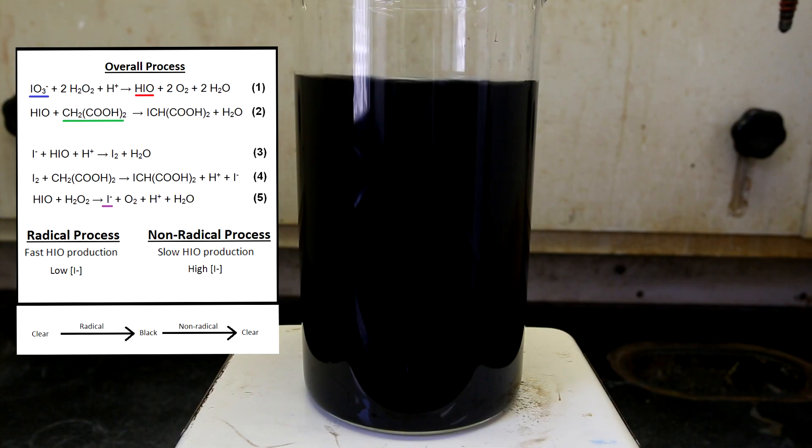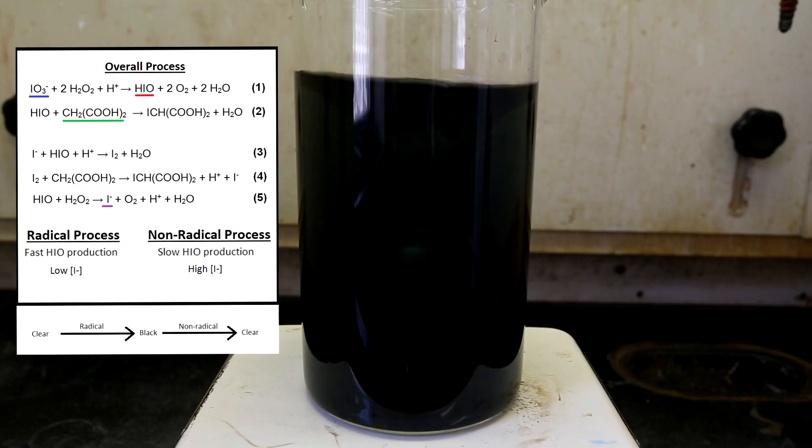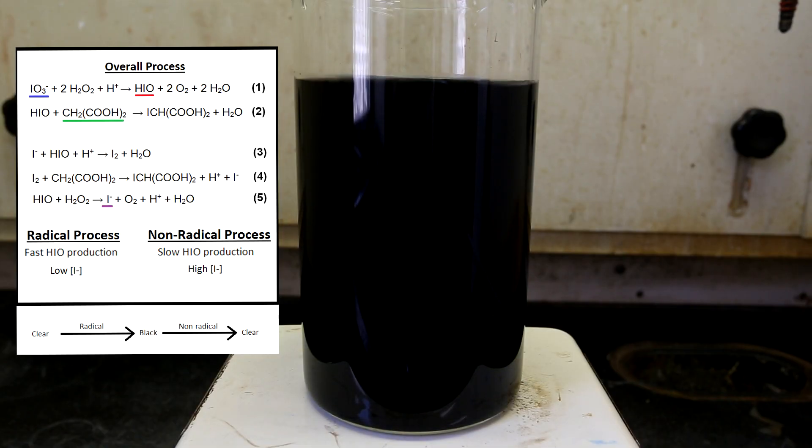Eventually, a threshold concentration of iodide will be reached. At this point, iodine and iodide molecules will combine together with starch to form a complex. The formation of the blue-black starch complex marks the end of the first half of the cycle and the end of the radical process.